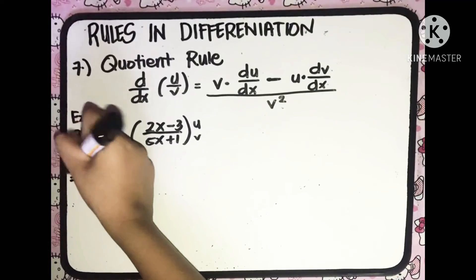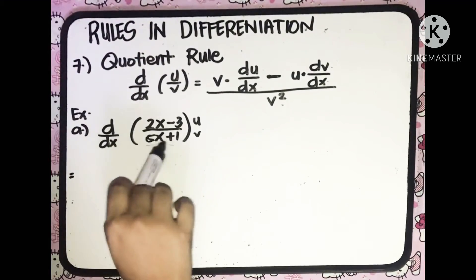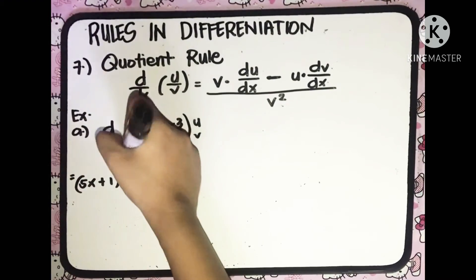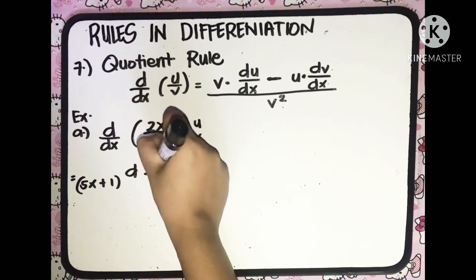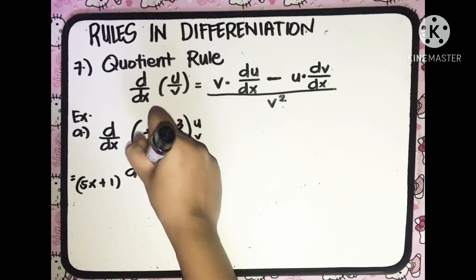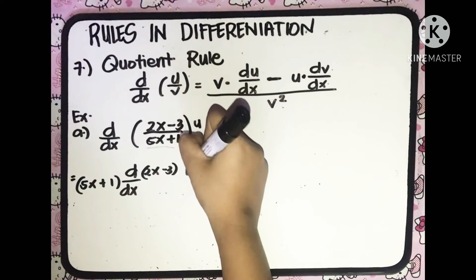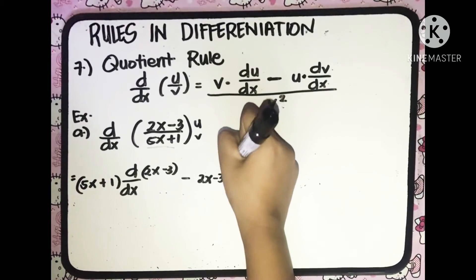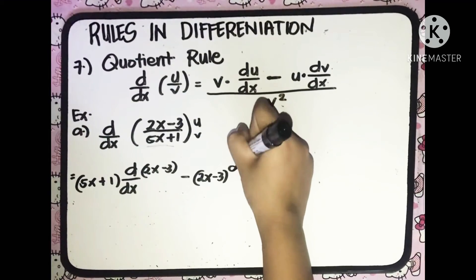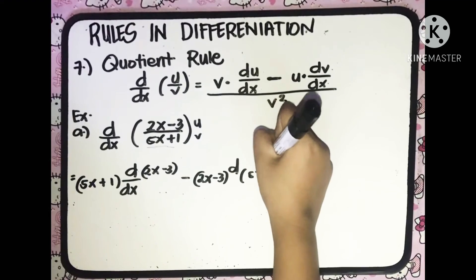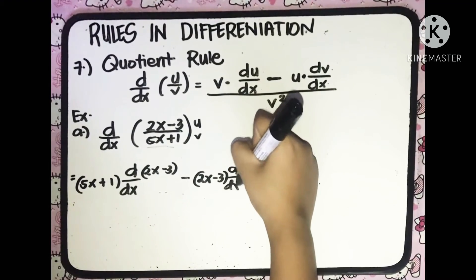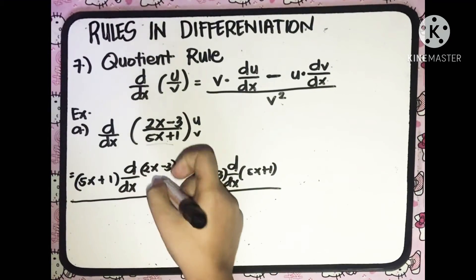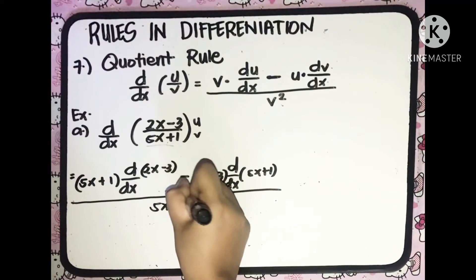we'll have v, which is equal to 5x plus 1, multiplied to the derivative of u, which is 2x minus 3 with respect to x, minus the value of u, which is 2x minus 3, multiplied to the derivative of v, which is 5x plus 1 with respect to x, all over the value of v, 5x plus 1, quantity squared.